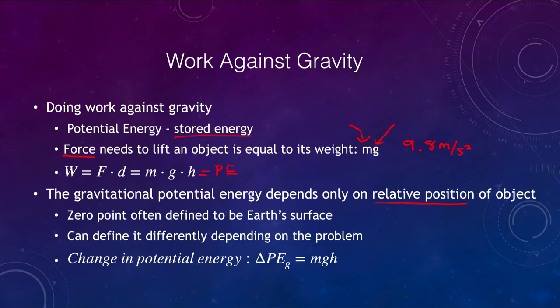There is no specific fixed zero point for gravitational potential energy. We can say it could be at the Earth's surface, but we might want to define it a certain distance above the Earth's surface — say the top of a table — if that is where something is resting. What we're looking for is the change in gravitational potential energy, equal to mass times gravitational acceleration times the height through which it is raised.